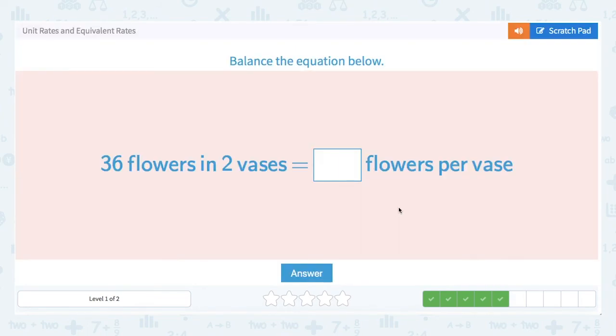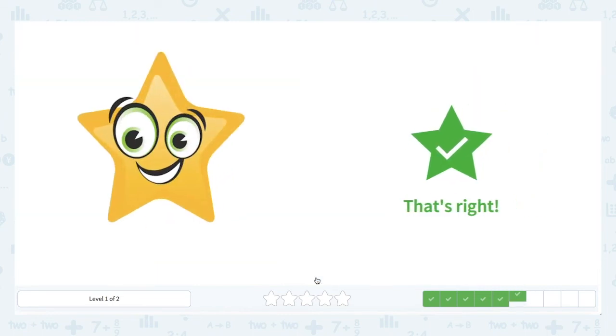36 flowers in two vases. All right, this one is similar to one that we saw before. If we divide 36 by two, that comes out to 18. So we have 18 flowers per vase.